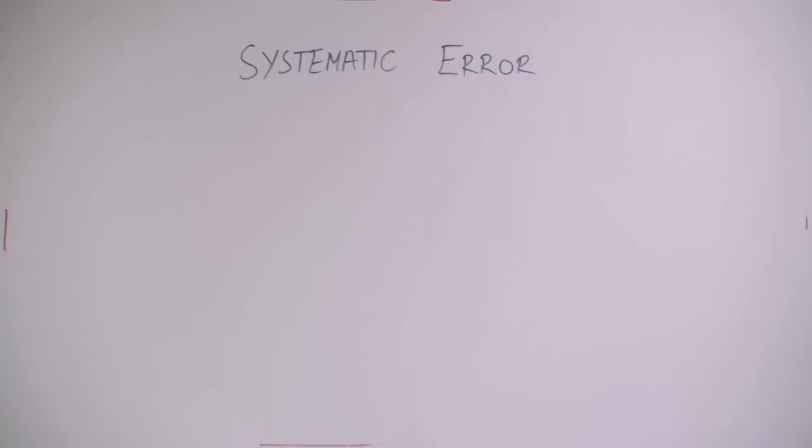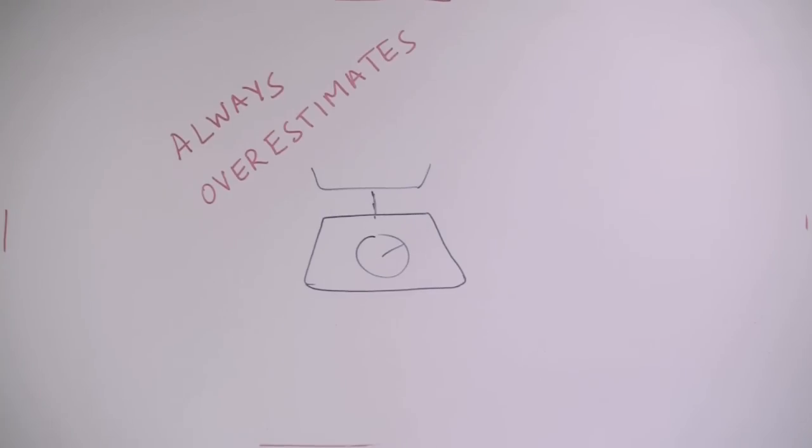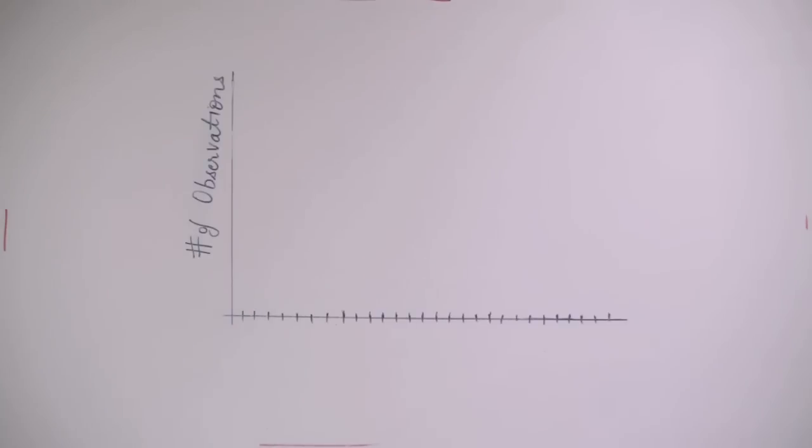Systematic error, which is also called bias, is either due to equipment fault or experimenter's fault. An example can be an uncalibrated weighing scale, which will never give us the true value.